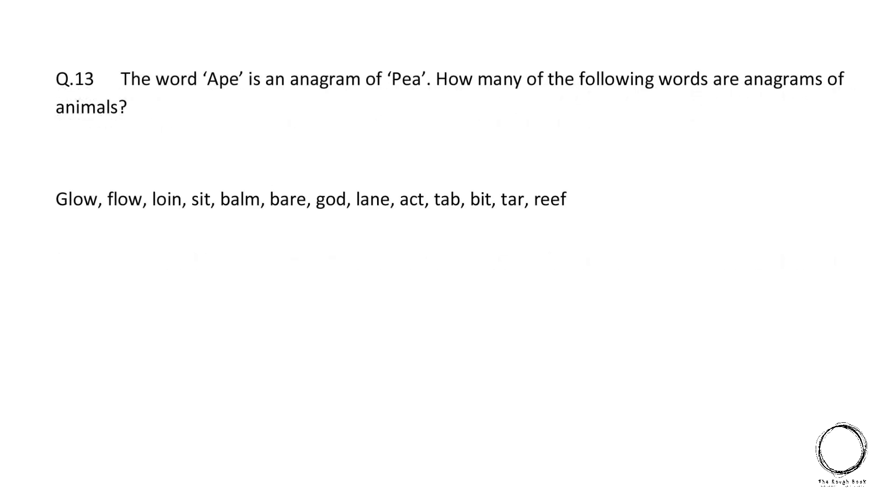Next, the word ape is an anagram of P-E-A. How many of the following words are anagrams of animals? So anagram is you can do permutation and combinations of the letters in the word. So starting with flow, which can be a wolf and so on. As you can see in the image below. So the answer is 8.